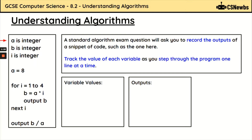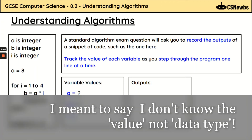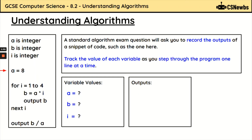The first line is 'A is integer'. That tells us we have a variable called A and that the data type is an integer, which is a whole number. Next, 'B is integer' — so now we have B, and again we don't know the value yet. Then 'I is integer' gives us a third variable called I. Moving into the main body of the program: A is equal to 8.